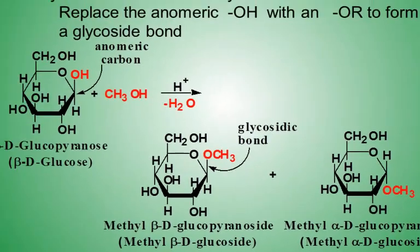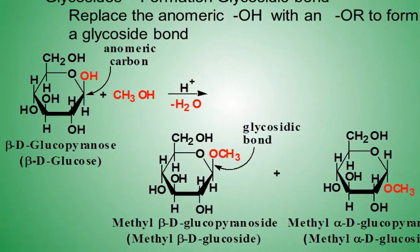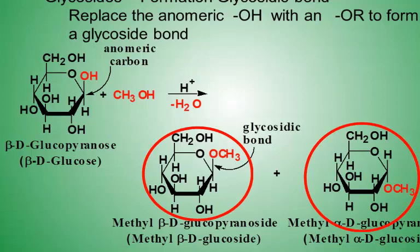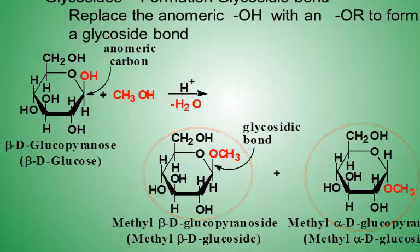For example, glucose reacts with methanol to form two new molecules. The glycosidic bond is between the anomeric carbon and the oxygen of the methanol molecule. Both the beta version and the alpha version form.